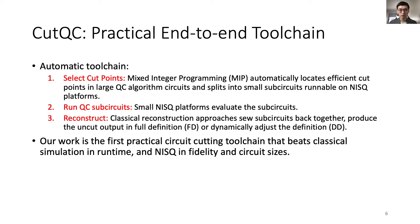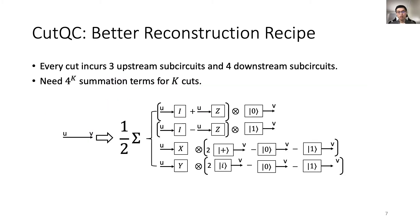On this note, CutQC is a fully automatic end-to-end toolchain that first selects efficient cut points given any input quantum circuit. Mixed integer programming, or MIP, automatically locates the optimal solutions. Small NISQ platforms subsequently evaluate the sub-circuits. Eventually, classical reconstruction techniques sew the sub-circuits back together, produce the uncut probability output either in full definition or dynamically adjusted definition. CutQC beats classical simulation in runtime, and NISQ in fidelity and circuit sizes.